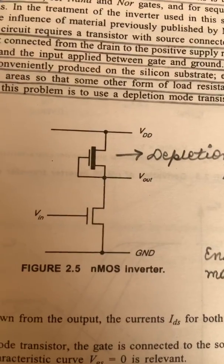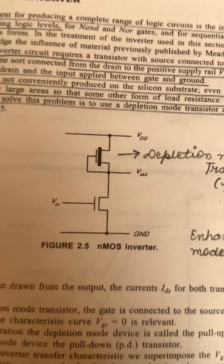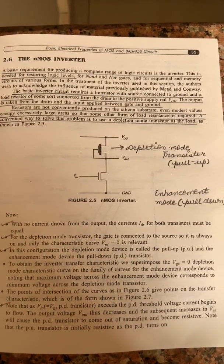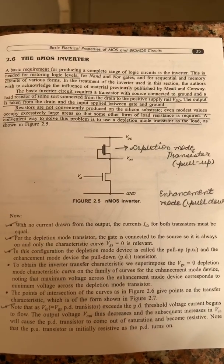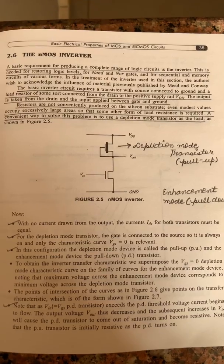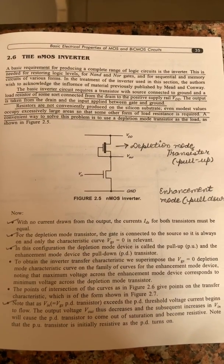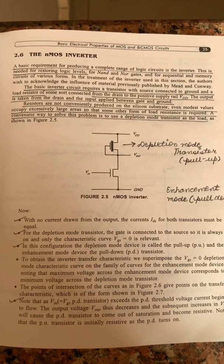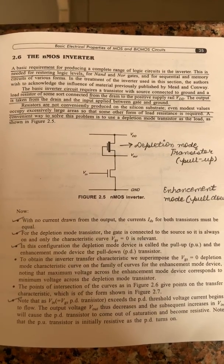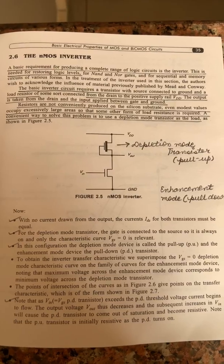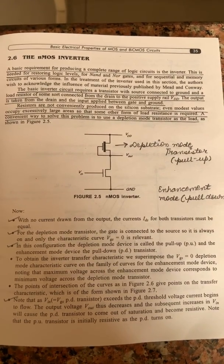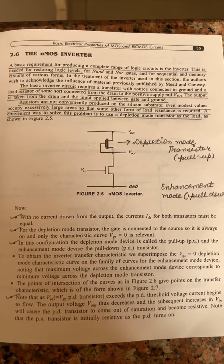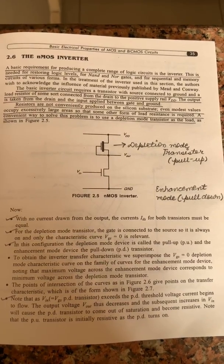You can see the diagram of the NMOS inverter. A basic requirement for producing a complete range of logic circuits is the inverter — this is needed for restoring logic levels. The basic inverter circuit requires a transistor with source connected to ground and a load resistor from drain to the positive supply. The output is taken from the drain and the input is applied between the gate and ground.